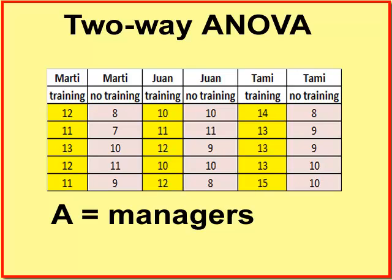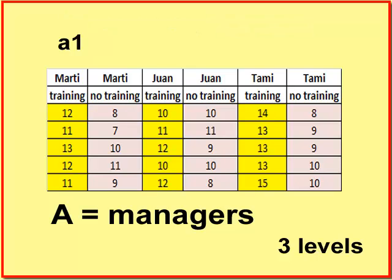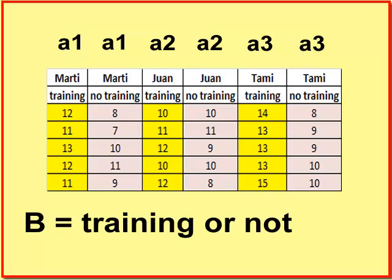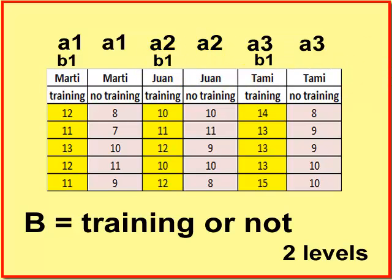We have two different variables. Our first variable, we're gonna call variable A. It's an independent variable. It's categorical, and it's the managers. It has three levels, and that would be Tammy, Juan, and Marty. We're gonna call Marty A1, Juan A2, and Tammy A3. Our second variable is, again, a categorical variable, and it was if the people got the training or not. Two levels. We'll call B1 those that got the training, and B2 those that did not get the training. So now everything's properly labeled.